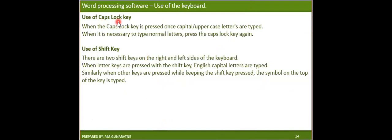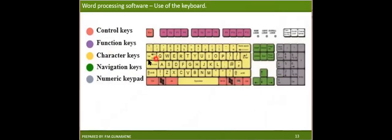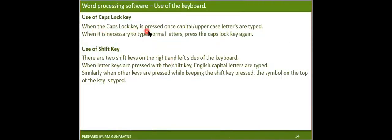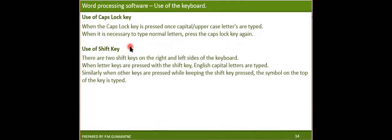The Caps Lock key is found right underneath the Tab key. When Caps Lock is pressed and turned on, uppercase letters are typed — all letters typed will be uppercase. When it is necessary to type normal letters again, you can press it again to toggle back to the original situation.